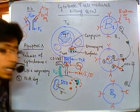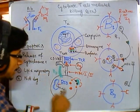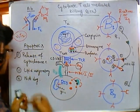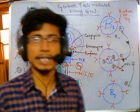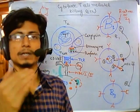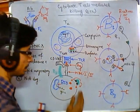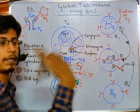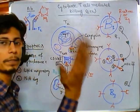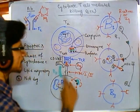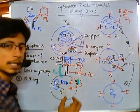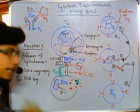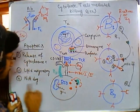As cytochrome c comes out, it also triggers lipid asymmetry changes. For example, phosphatidylserine, which is normally present on the inner cytoplasmic side, gets flipped to the outside of the membrane. This flipping provides a signal to other killer cells to kill this cell.